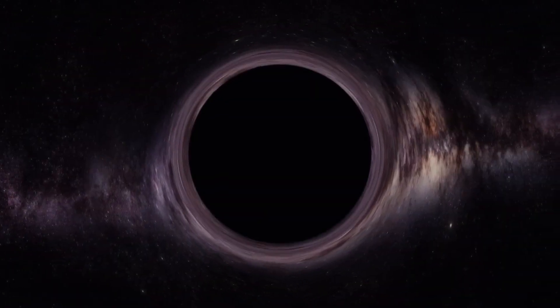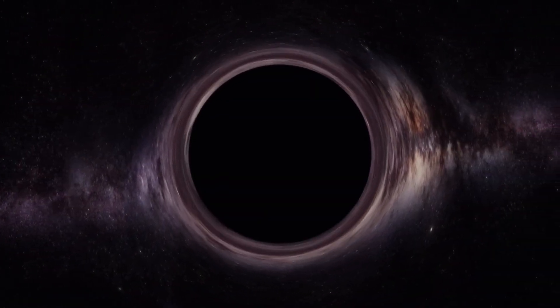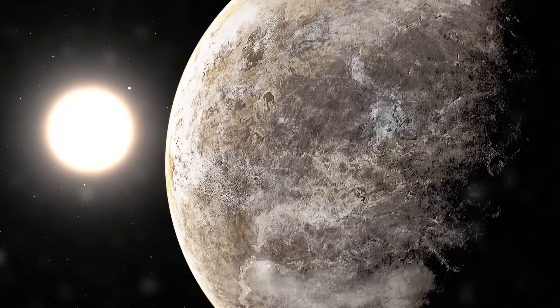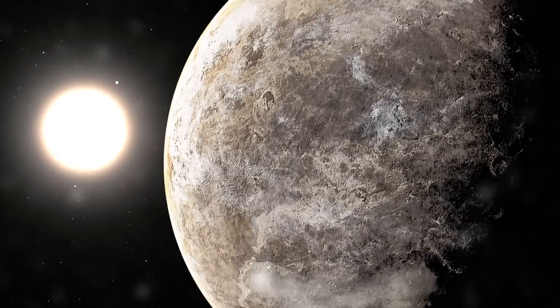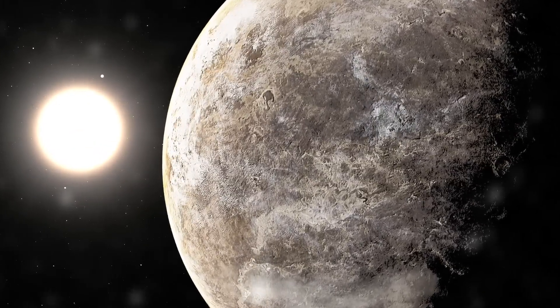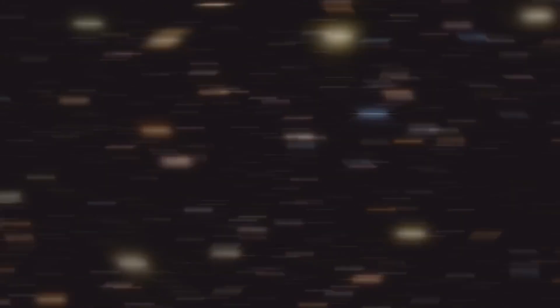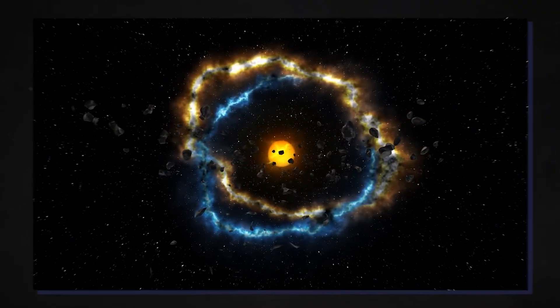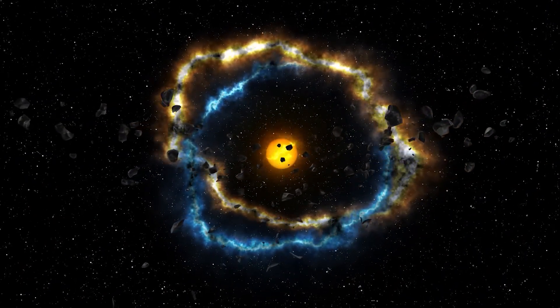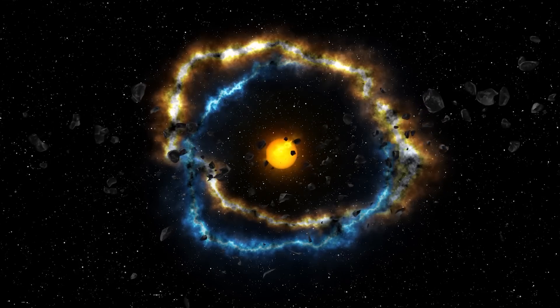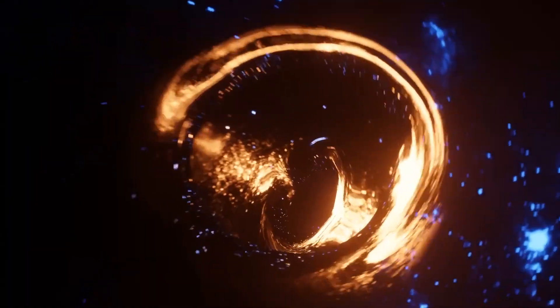The black hole nearest to Earth, affectionately called the Unicorn, is located around 1,500 light-years away. This black hole got its name for two reasons. Firstly, it resides in the constellation Monoceros. And secondly, it's an extremely rare find because it has a surprisingly low mass, about three times that of the Sun.